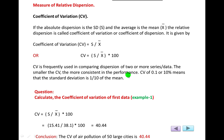Smaller CV indicates stability in the performance. A CV of 0.1, or 10% — if you apply the percentage formula you will obtain percentage; both are the same. A CV of 0.1 or 10% means that the standard deviation is one tenth of the mean.